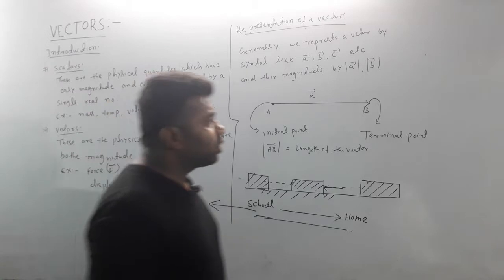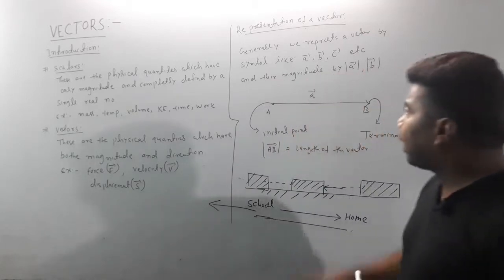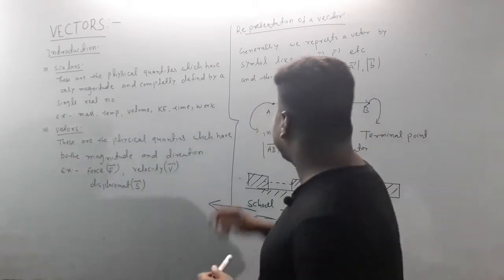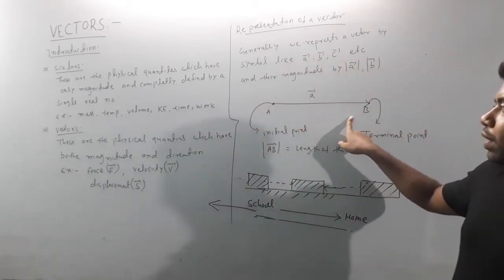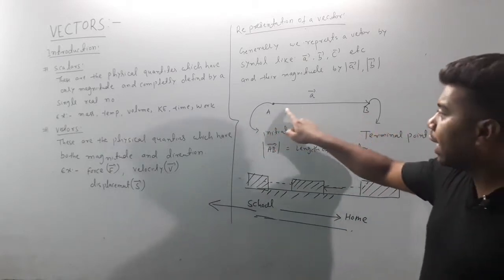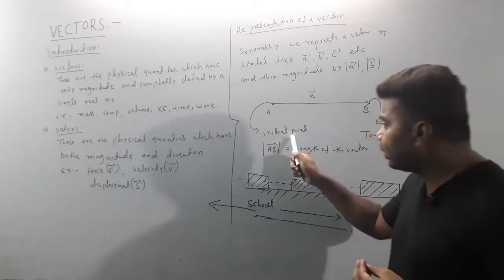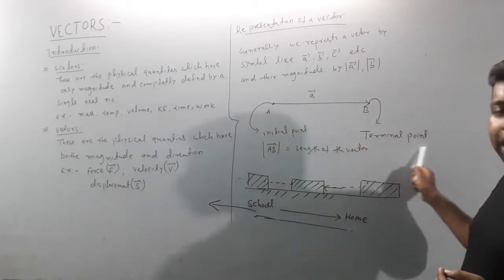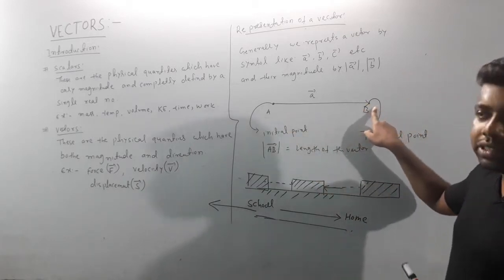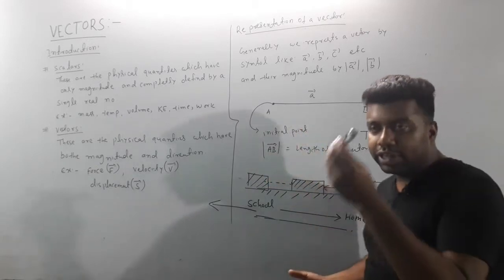The next question is the representation of a vector. A vector has both magnitude and direction. For example, an object moves from point A to point B. The initial point is called the start — that is your initial point — and the end is the terminal point. We represent a vector with an arrow. The arrow gives the direction, and the magnitude means the length of the vector — for example, 10 cm or 12 cm.